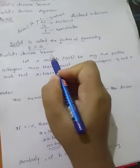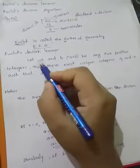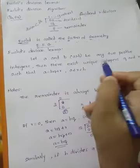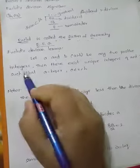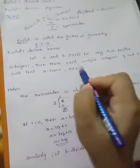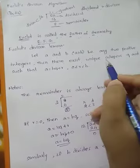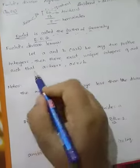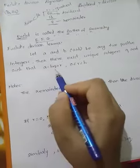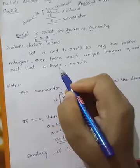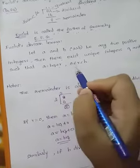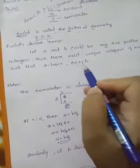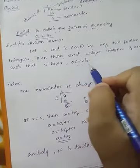Euclid Division Lemma: Let A and B be any two positive integers. Then there exist unique integers Q and R such that A is equal to BQ plus R, where 0 is less than or equal to R, and R is less than B.